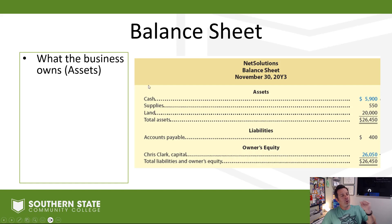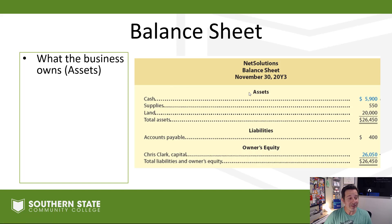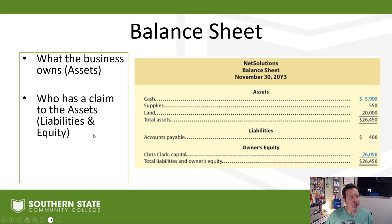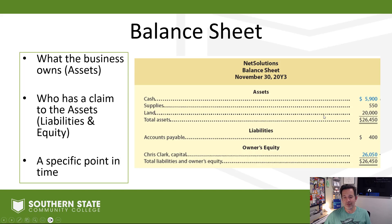On our balance sheet, assets are what the business owns - just like you have assets in your home: a car, a house, a stereo, an iPhone. Those are things you own. We also have who has a claim to the assets of the business. The claims come from either creditors in the form of a liability, or owners. So the balance sheet is going to show what we own and who has a claim to it as of November 30th.